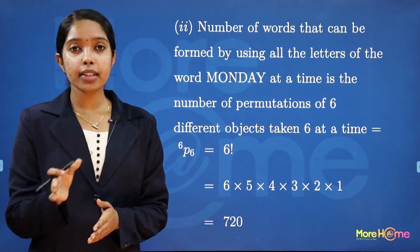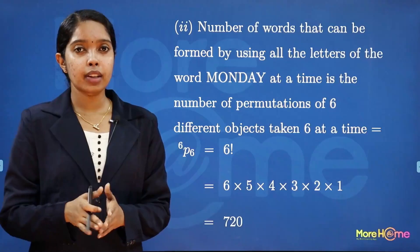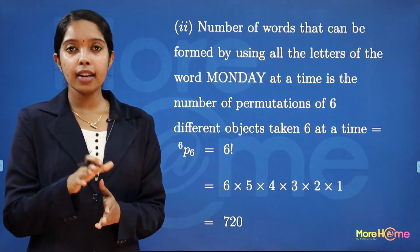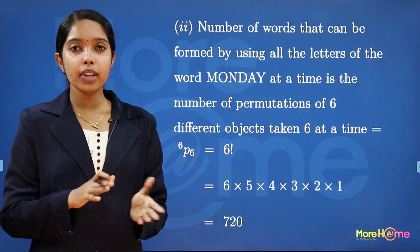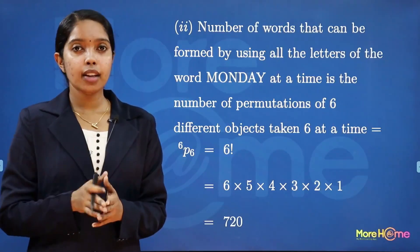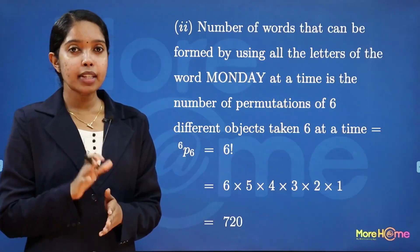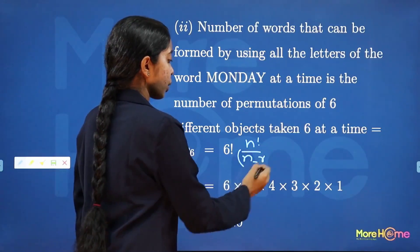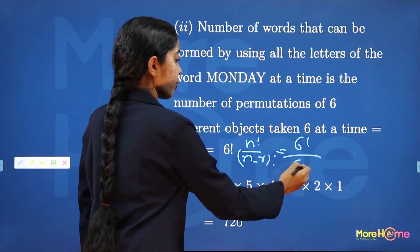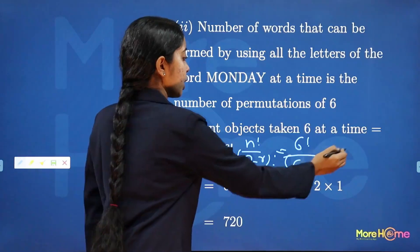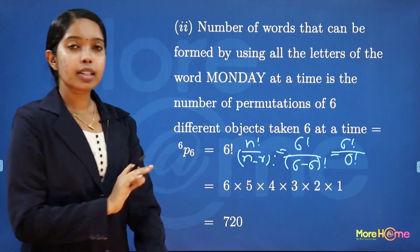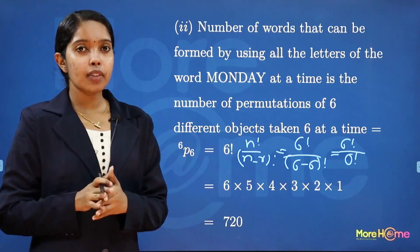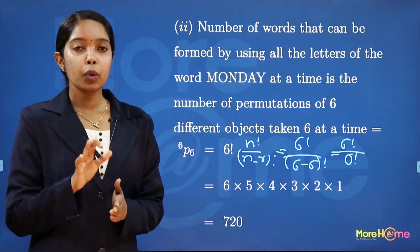The second question: all letters are used at a time. So N equals 6 and R equals 6. Using the permutation formula: 6P6 equals 6 factorial divided by 6 minus 6 factorial, which is 6 factorial divided by 0 factorial. Since 0 factorial equals 1, this gives 6 factorial, which equals 720.